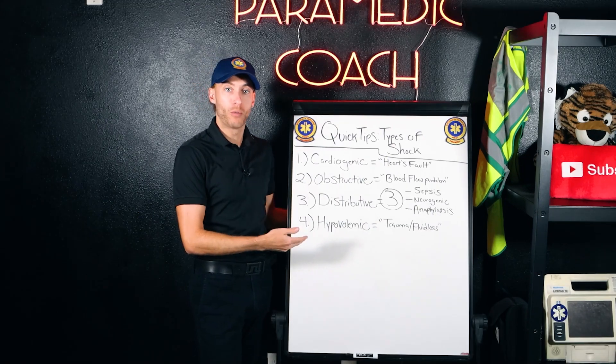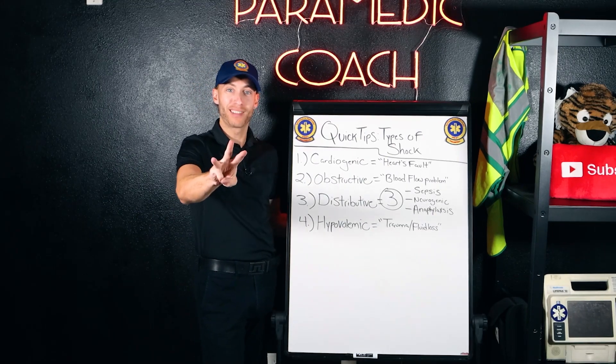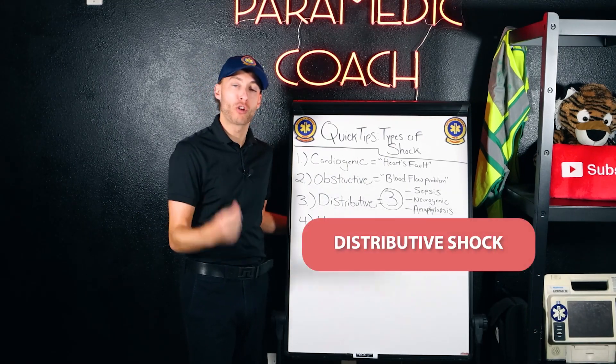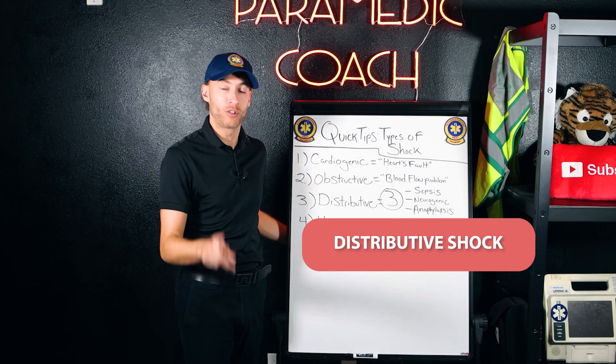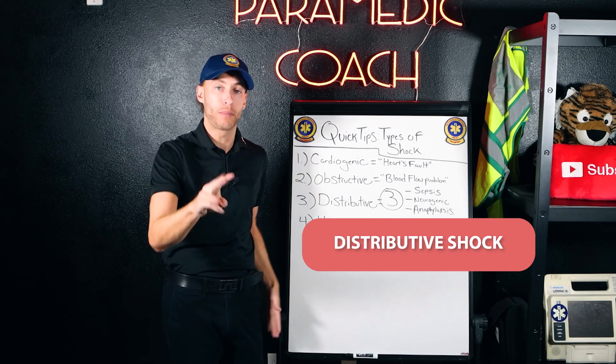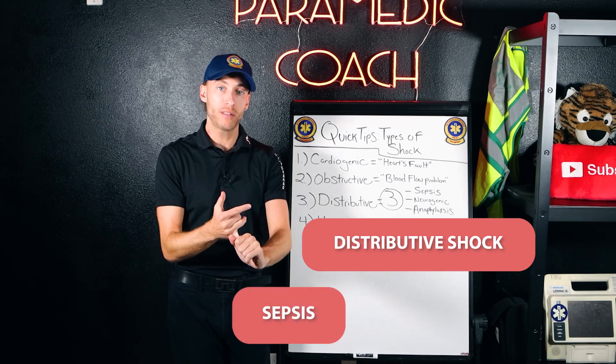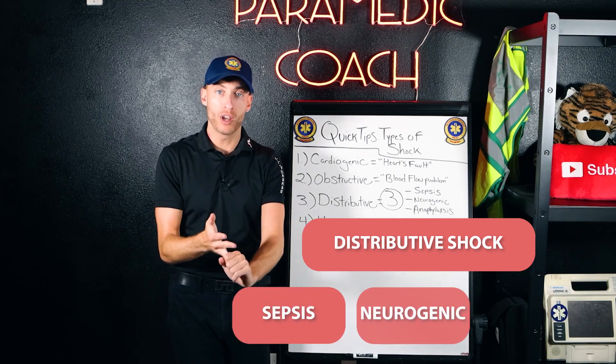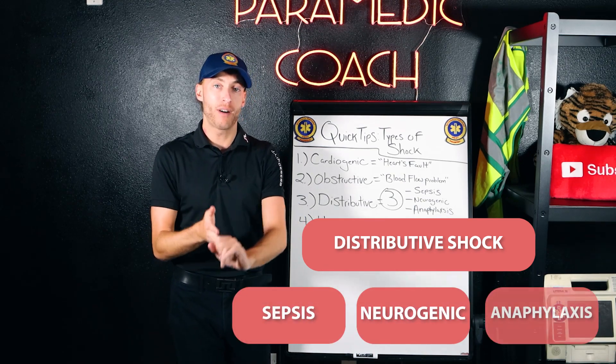The third type, which has three subtypes, is distributive shock. It's very important. The three types are: sepsis, neurogenic, and anaphylaxis.